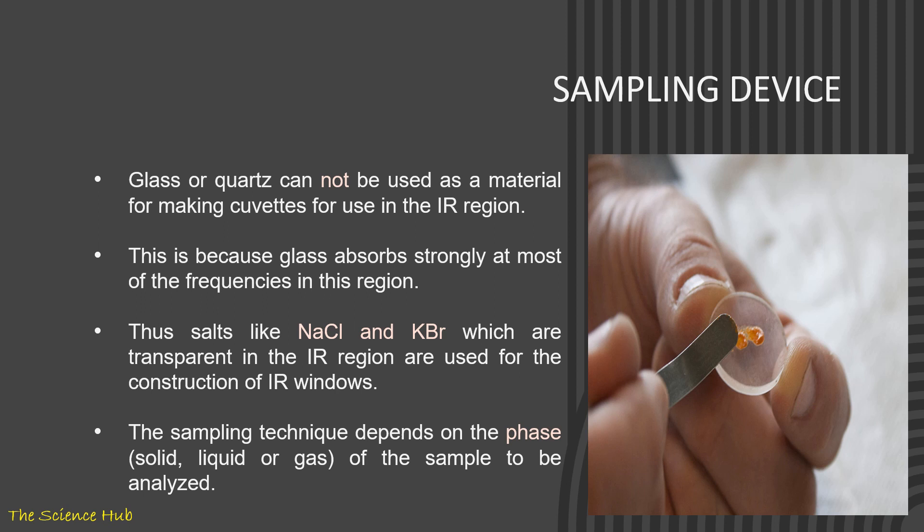Sampling device: glass or quartz cannot be used as a material for making cells for use in IR region. This is because glass absorbs strongly at most of the frequencies in this region. Those salts like NaCl and KBr which are transparent in the IR region are used for the construction of IR windows. The sampling technique depends on the phase—solid, liquid, or gas—of the sample to be analyzed.